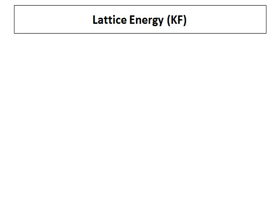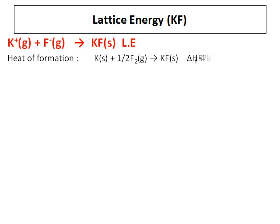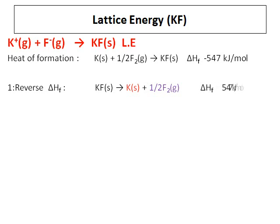Lattice energy of potassium fluoride. Apart from using the Born-Haber cycle, is there another way of doing the same thing and getting the same result? Let's define lattice energy again: it is the energy released when the ionic compound is formed from its ions in the gaseous state. The first step is to write down the heat of formation of potassium fluoride — that is when one mole of a substance is formed from its elements in their standard state. The standard state of potassium is solid and that of fluorine is gas, and I just need one mole of KF. The first step is to reverse ΔHf — so whatever equation you have written, just reverse it. It becomes KF solid giving you K solid plus half of F₂. Since I reverse the equation, I also reverse the sign of ΔHf, and it will become a positive value now.